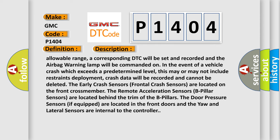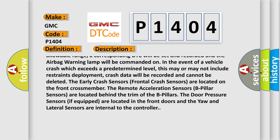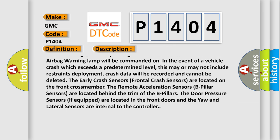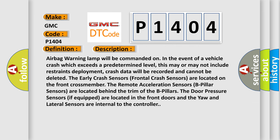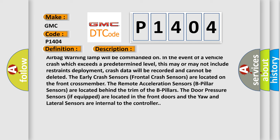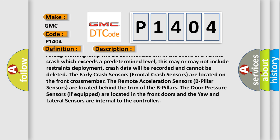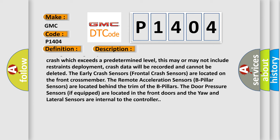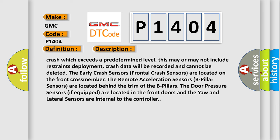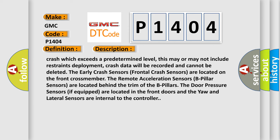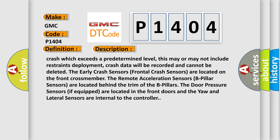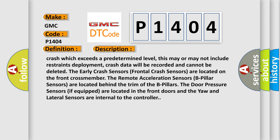This may or may not include restraints deployment. Crash data will be recorded and cannot be deleted. The frontal crash sensors are located on the front crossmember. The remote acceleration sensors (B-pillar sensors) are located behind the trim of the B-pillars. The door pressure sensors, if equipped, are located in the front doors, and the ORC and lateral sensors are internal to the controller.